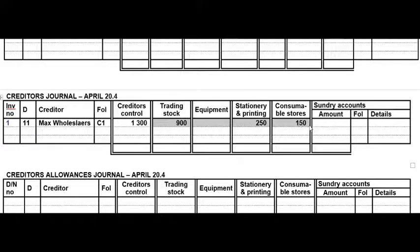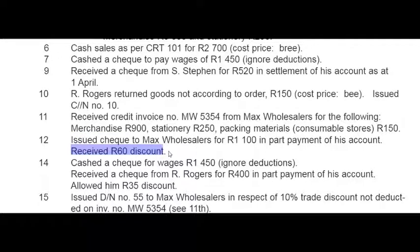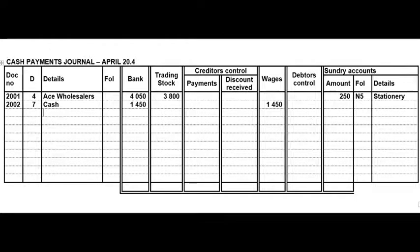On the 12th we issued a cheque — CPJ — to Max Wholesalers for 1100 rand in part payment of the account and we received 60 rand discount. Be careful: the amount written on the cheque is 1100 rand and the discount is 60 rand, so don't subtract the 60 from the 1100 — we actually paid 1100 rand.